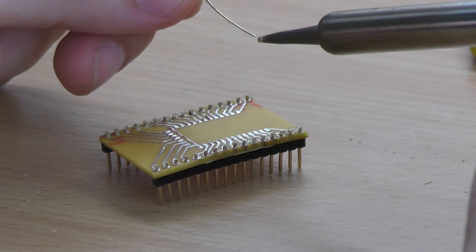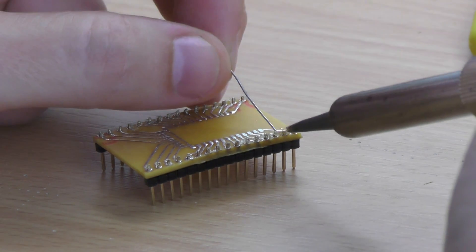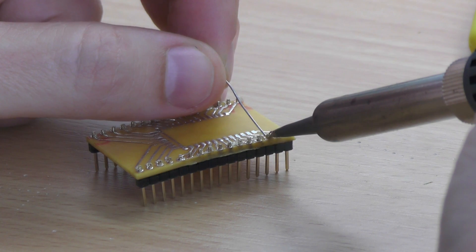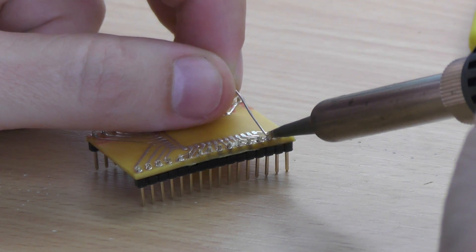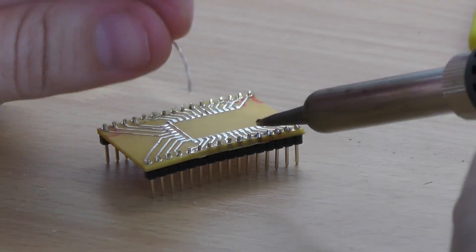To solder the header pins, I put the iron on one side of the pin to heat it up and add the solder on the other side until it reflows. This ensures enough heat and avoids cold solder joints.